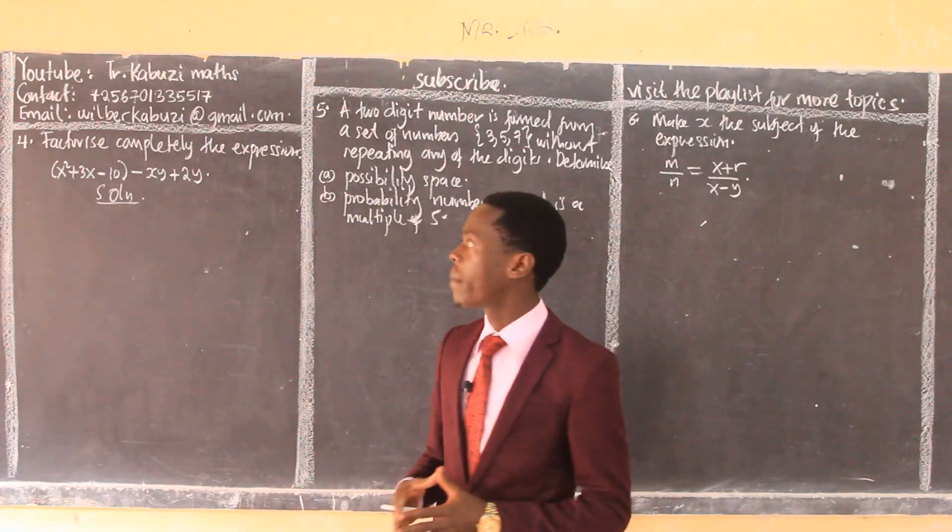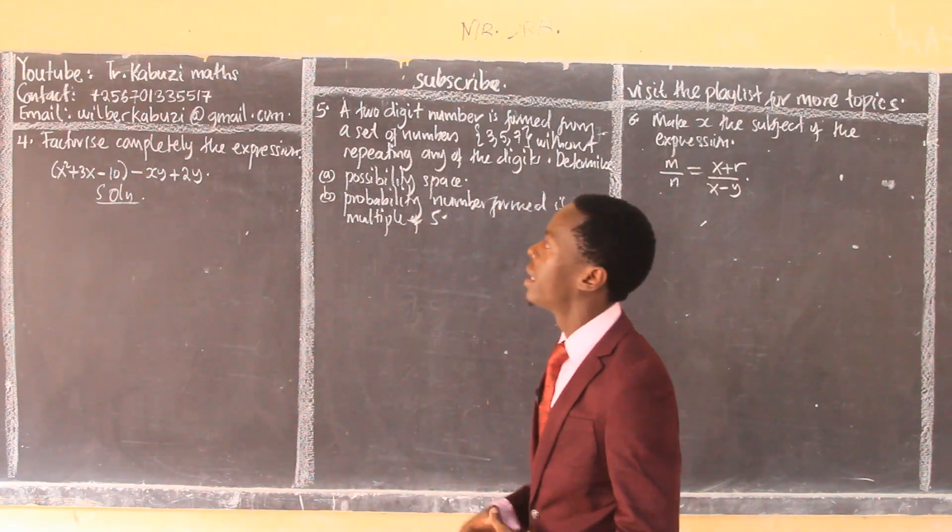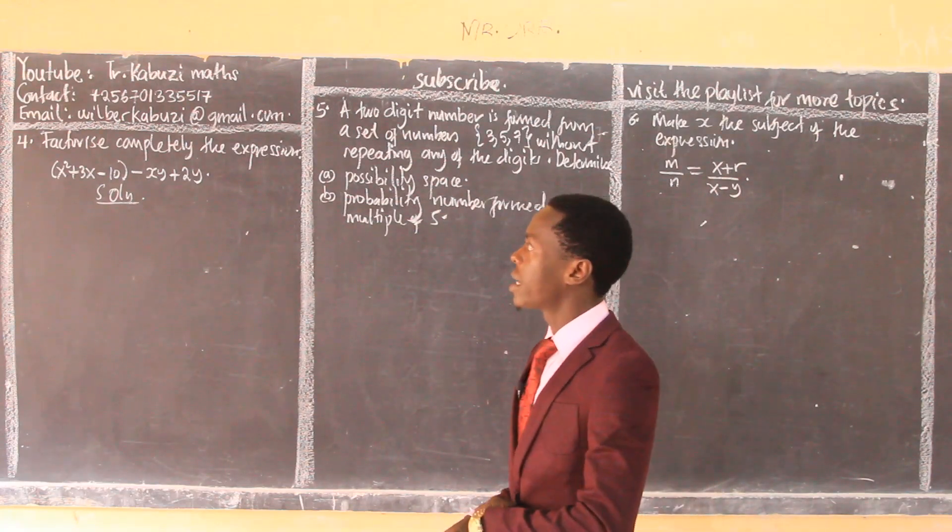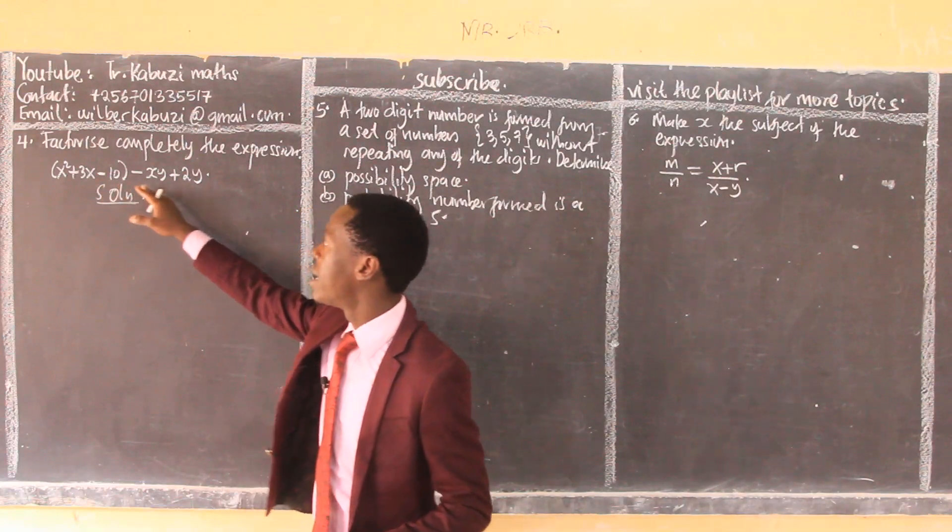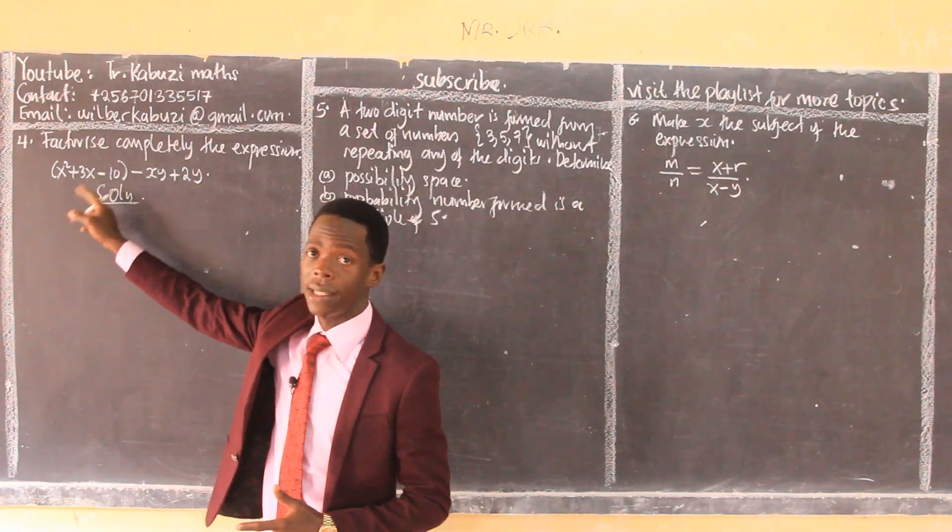Okay, now let's solve our next set of problems: number four, five, and six. Number four asks to factorize completely the expression. First, you need to look at this - it's a quadratic and then this is just a simple expression. So what you do is first factorize this one.